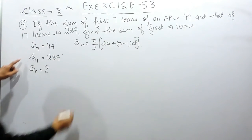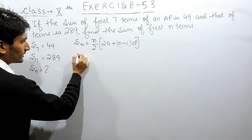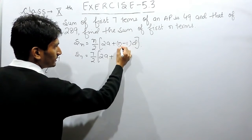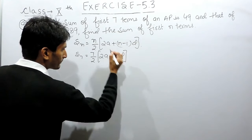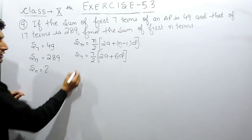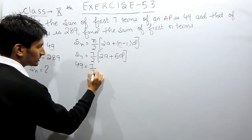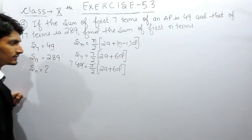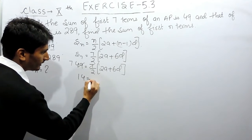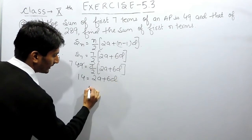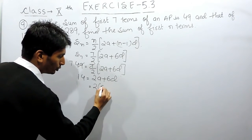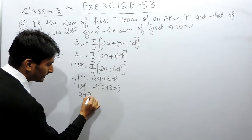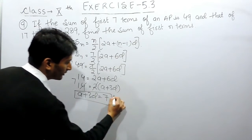In the first case, there are 7 terms, so the sum of 7 terms equals 7 by 2 multiplied by (2A plus 6D), since 7 minus 1 is 6. The sum of 7 terms is given as 49, so substituting: 49 equals 7 by 2 into (2A plus 6D). Cancelling 7 and cross-multiplying gives 14 equals 2A plus 6D. Taking 2 as common: 7 equals A plus 3D. This is our first equation.